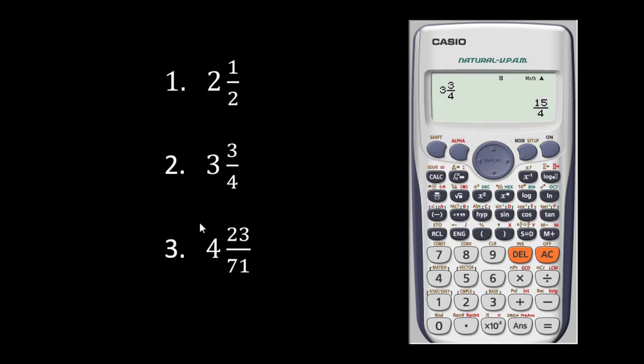Alright. So I press my AC key once again. And then I press the shift and the fraction key. Now this time you press 4. And then you scroll up. Key in your 23.